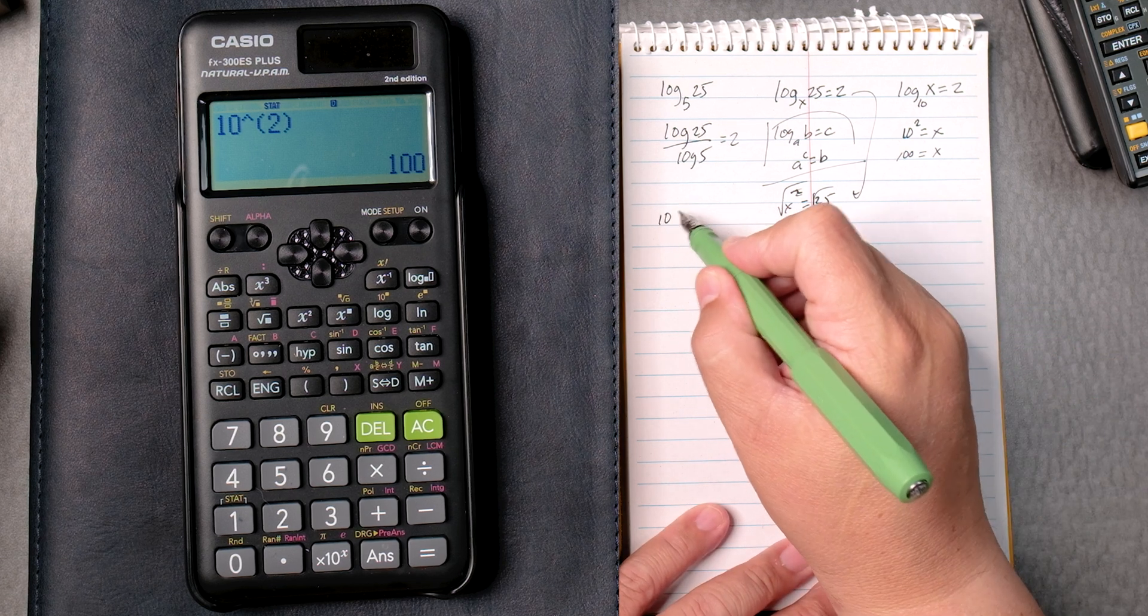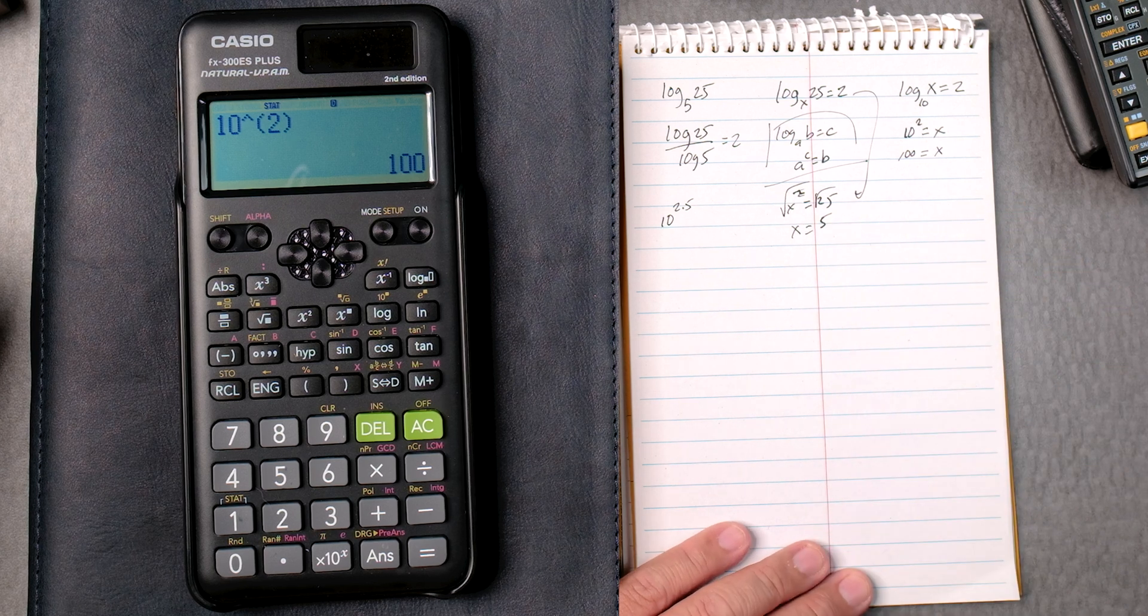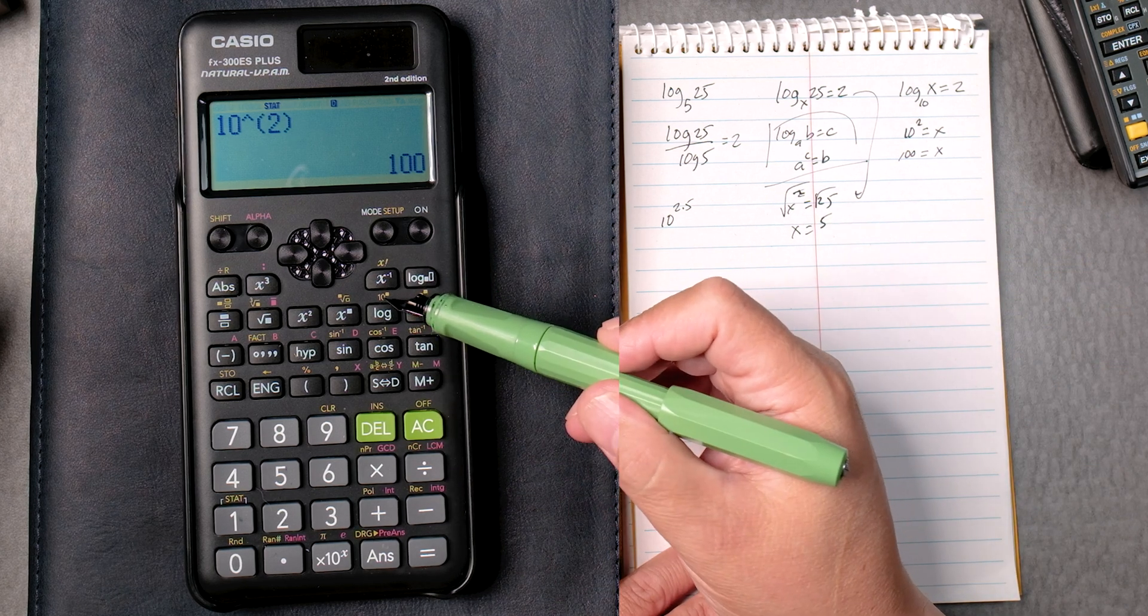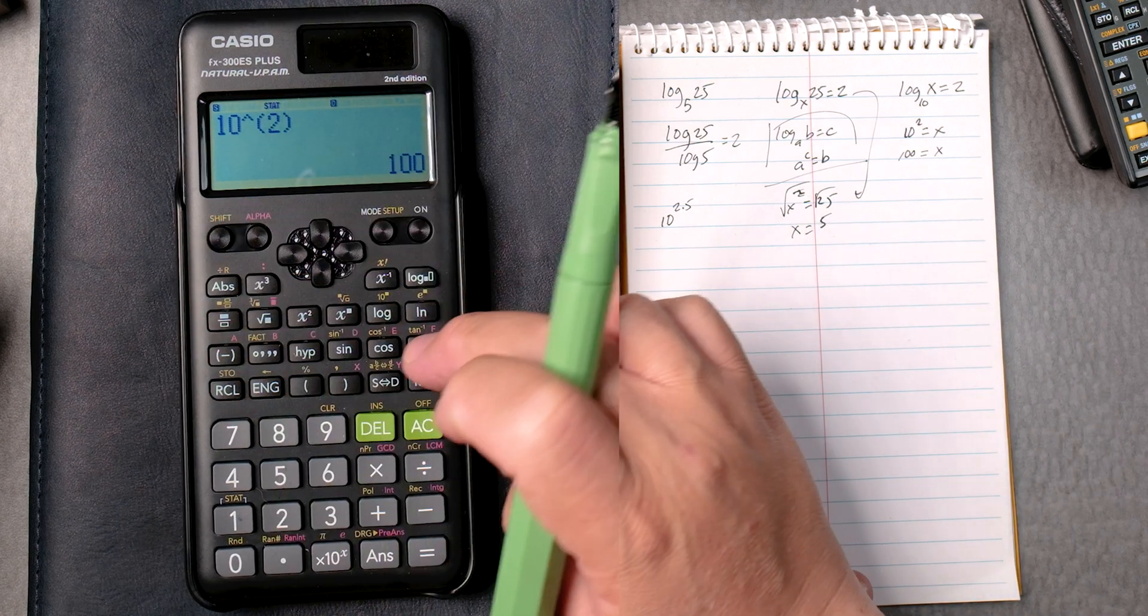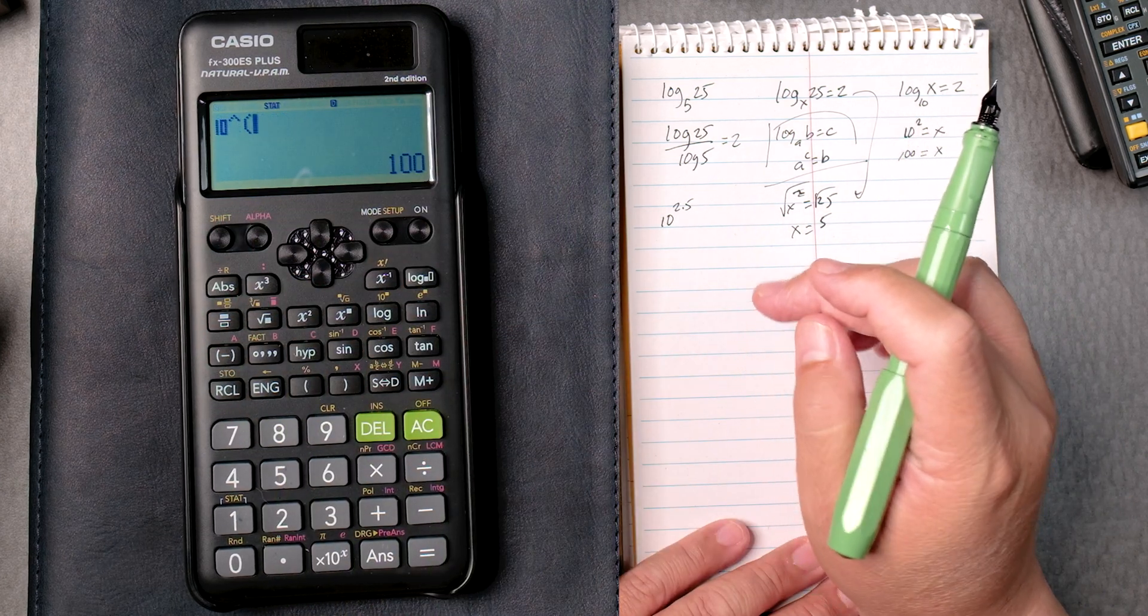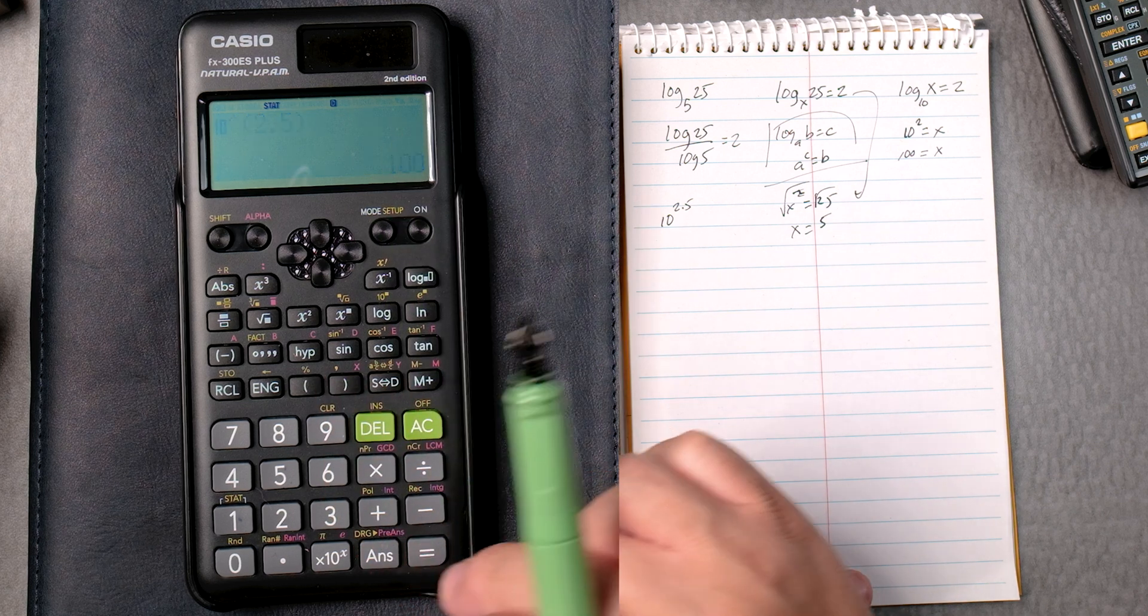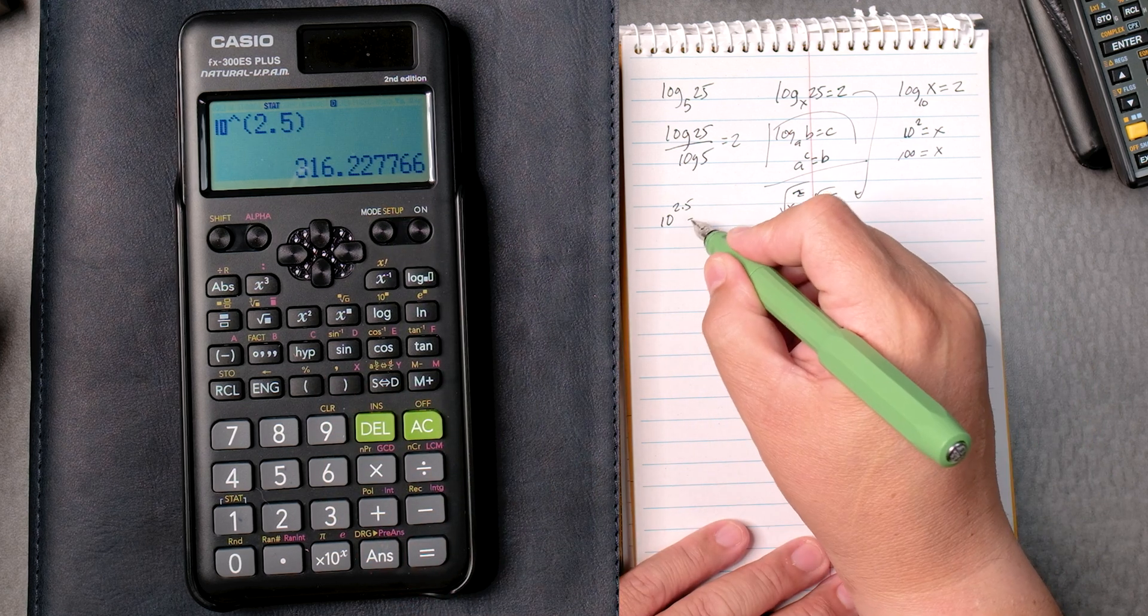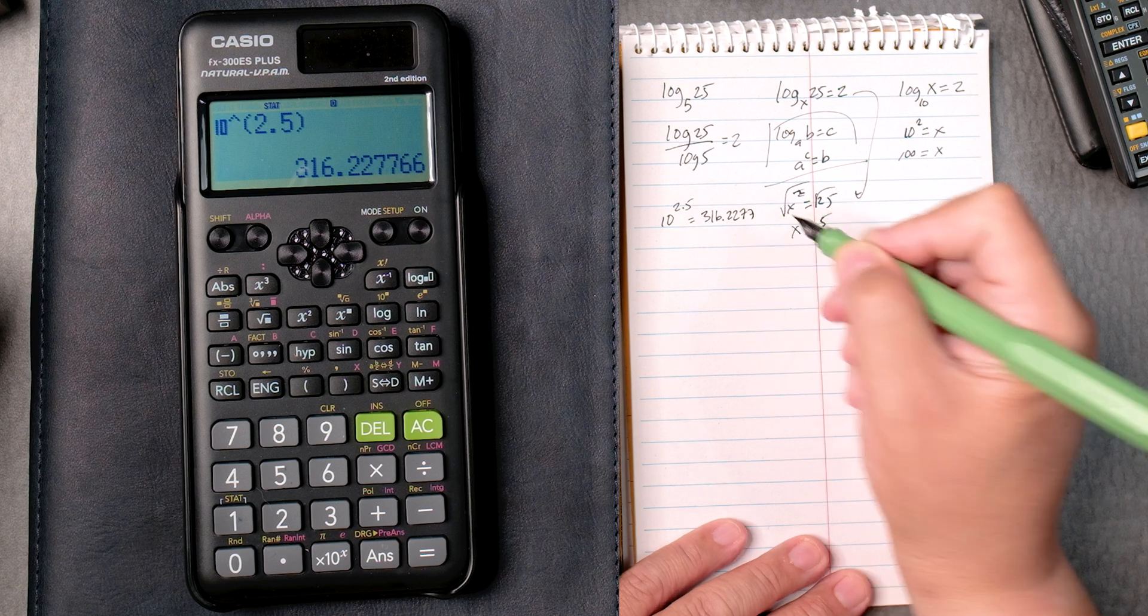Then some anti-logs, 10 to the 2.5. If you look over here, there's a 10 to the blank. We can use that for this one. Shift, the log key, 2.5. You don't need to close it, but we will on the parentheses, and then we get, press equals, 316.2277. Nice.